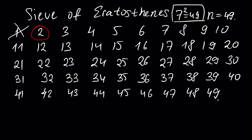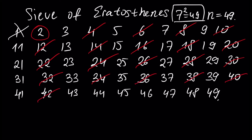We take the first prime number, two, and cross out all the multiples of two: four, six, eight, ten, twelve, fourteen, sixteen, eighteen, twenty, twenty-two, twenty-four, twenty-six, twenty-eight, thirty, thirty-two, thirty-four, thirty-six, thirty-eight, forty, forty-two, forty-four, forty-six, forty-eight. All numbers we cross out are not prime numbers. We are looking for prime numbers and crossing out numbers which are not prime numbers.